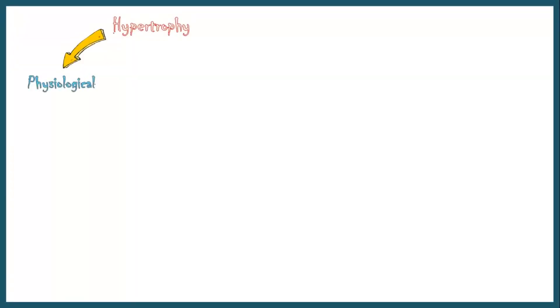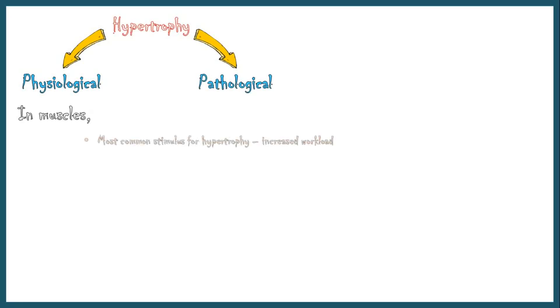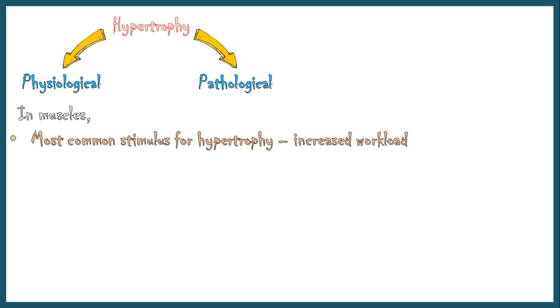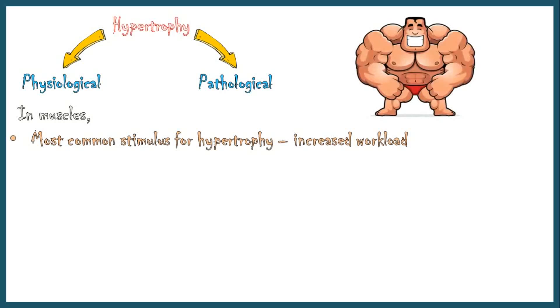Hypertrophy could be either physiological or pathological. In muscles, the most common stimulus for hypertrophy is increased workload. For example, the bulging of muscles in bodybuilders is due to increased workload, which causes enlargement of individual muscle fibers.